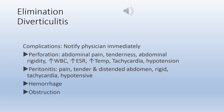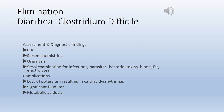If complications occur, notify the physician immediately. Signs of perforation include abdominal pain, tenderness, abdominal rigidity, elevated white blood cell count, elevated erythrocyte sedimentation rate, increased temperature, tachycardia, and hypotension. Signs and symptoms of peritonitis include pain, tender and distended abdomen that is also rigid, tachycardia, and hypotension. Additional complications include hemorrhage and obstruction.